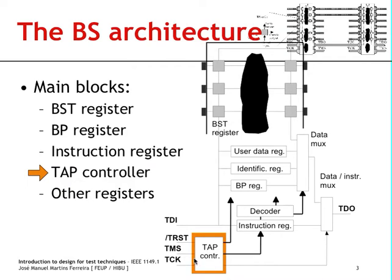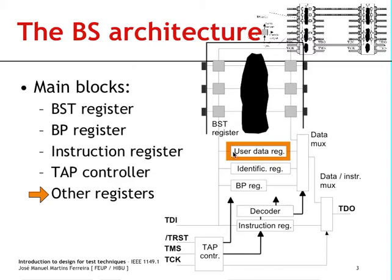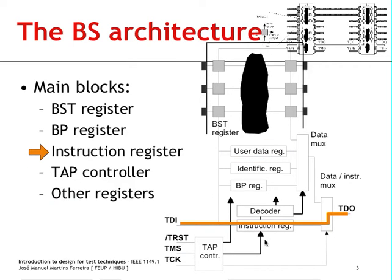The test access port controller finite state machine is what we might see as the brain controlling the boundary scan architecture within each IC. There may also be other registers inside the boundary scan architecture; these user data registers might include, for example, an identification register which comprises a 32-bit pattern identifying the device, its manufacturer, and additional information. The way to select the identification code register, if it exists, is to load in the appropriate instruction which will set the data multiplexer to operate in the appropriate form.